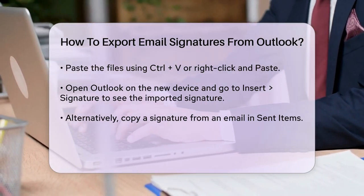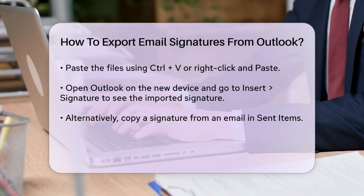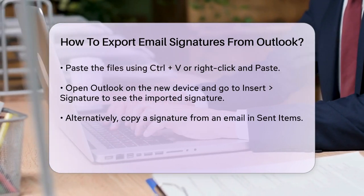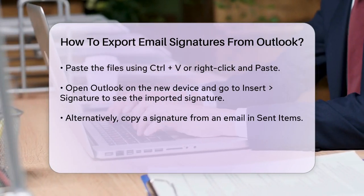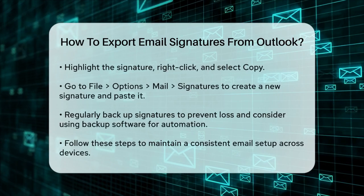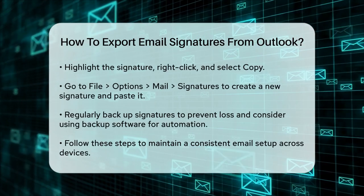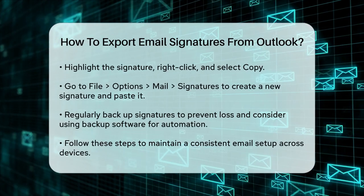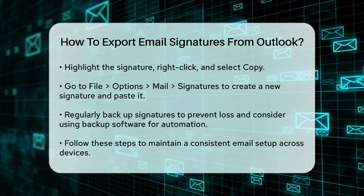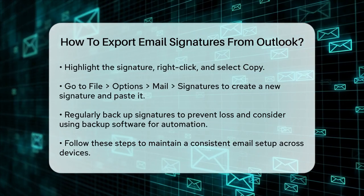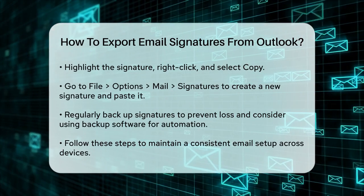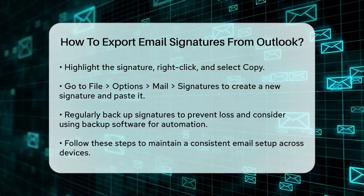Another quick method is to copy and paste your signature directly from an email. Open Outlook, go to your Sent Items folder, find an email with the signature you want to copy, highlight the signature, right-click, and select Copy. Then go to File > Options > Mail > Signatures. Create a new signature and paste the copied signature into the edit box.